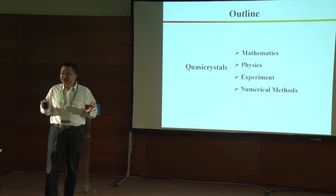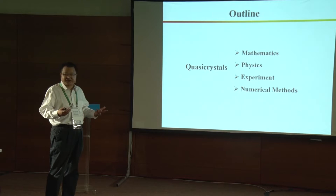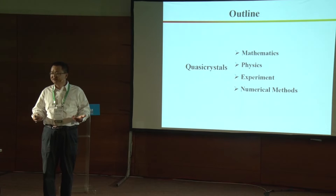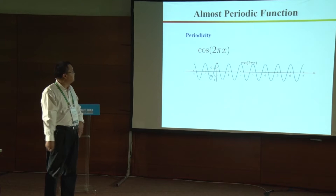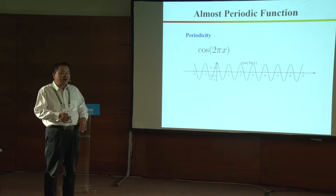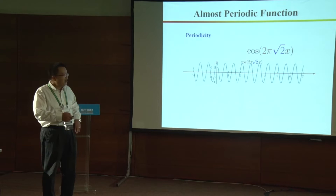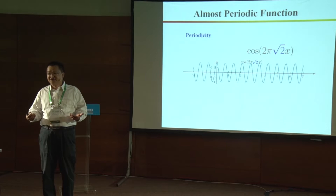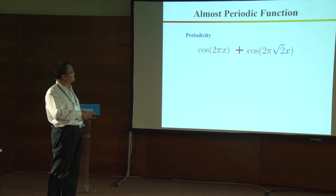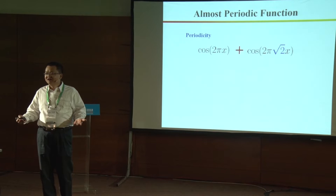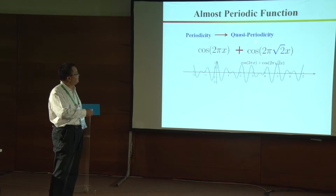Now I'm talking about quasicrystals from different angles — first mathematics, then physics experimentally, and finally numerical methods. Regarding periodicity: cos(2πx) is a periodic function, and cos(2π√2·x) is also a periodic function. But cos(2πx) + cos(2π√2·x) is not a periodic function. We call this a quasicrystal.